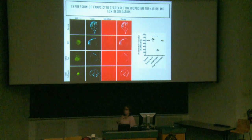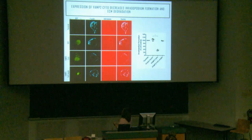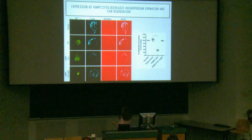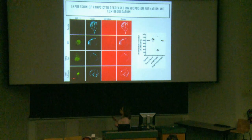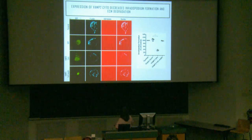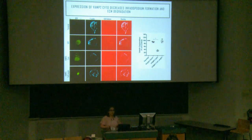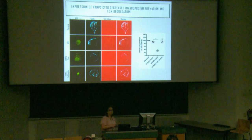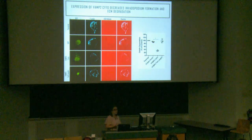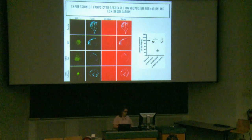When expressing VAMP-2 cyto, we get a decrease in invadipodia formation at four hours compared to parental cells and empty vector controls. Using full-length protein as our control, these cells are also able to make invadipodia. We see the same phenotype in the longer gelatin degradation assay — decreased ability to degrade gelatin — indicating that not only is VAMP-2 expression important, but its function is also required for invadipodia formation.